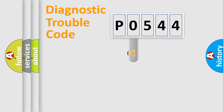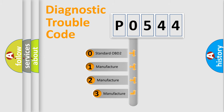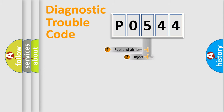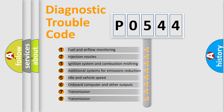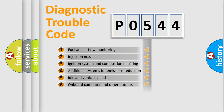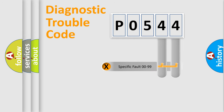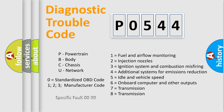This distribution is defined in the first character of the code. If the second character is expressed as zero, it is a standardized error. In the case of numbers 1, 2, or 3, it is a more manufacturer-specific error expression. The third character specifies a subset of errors, and this distribution is valid only for the standardized DTC code. Only the last two characters define the specific fault of the group.